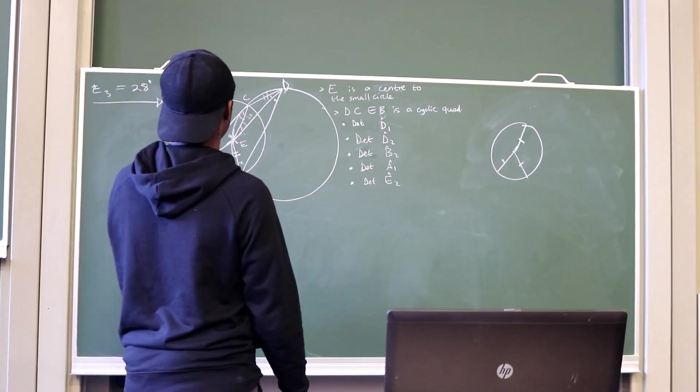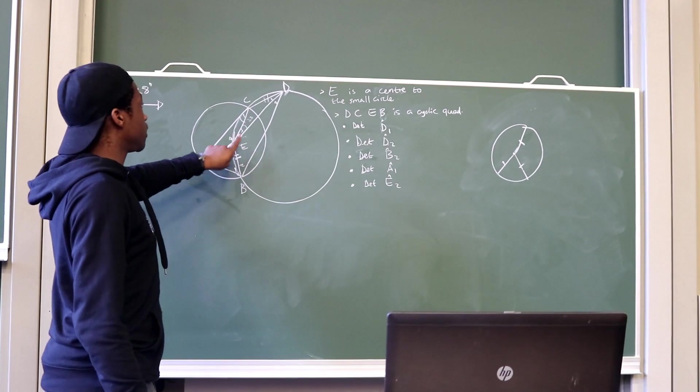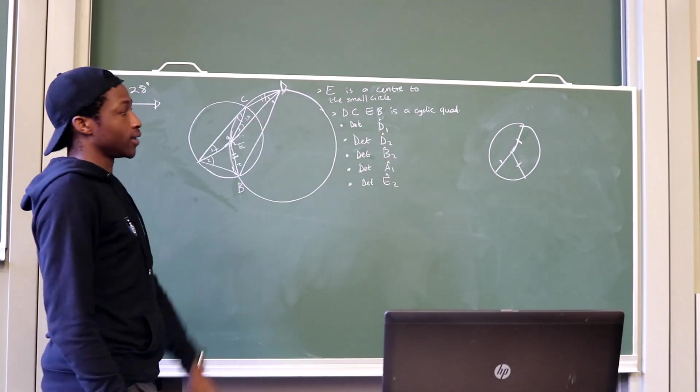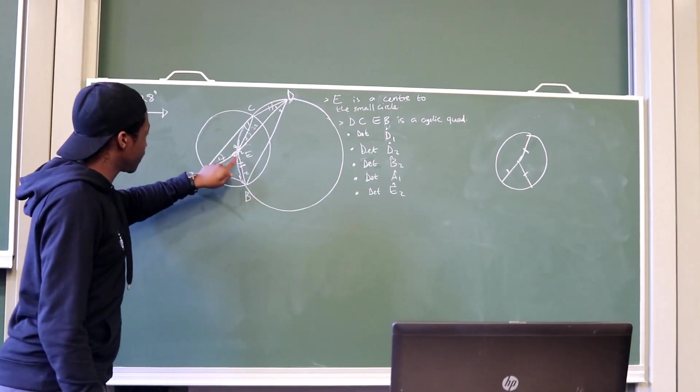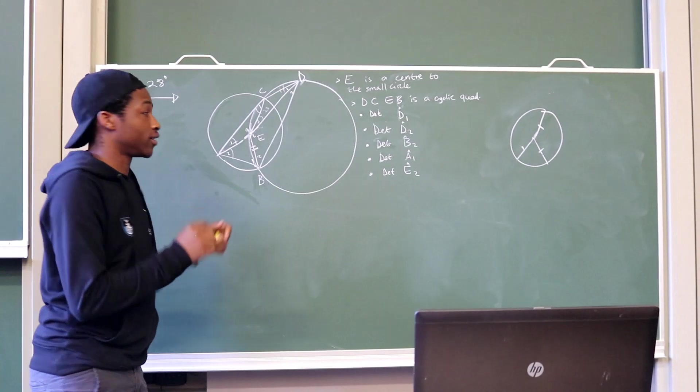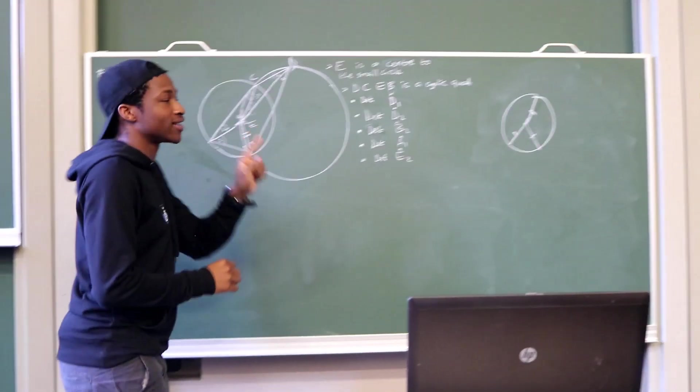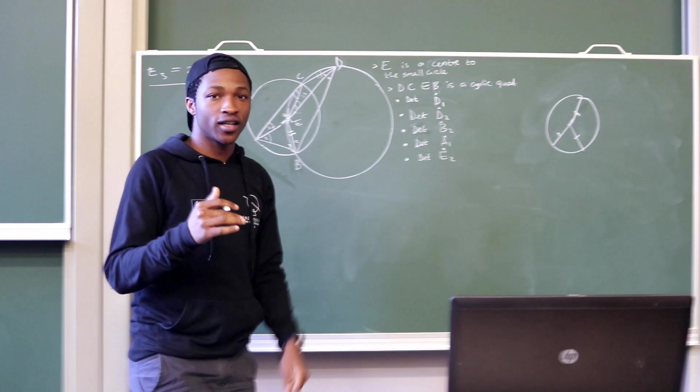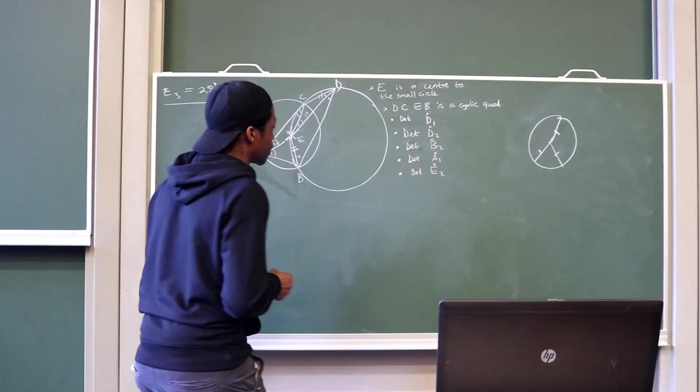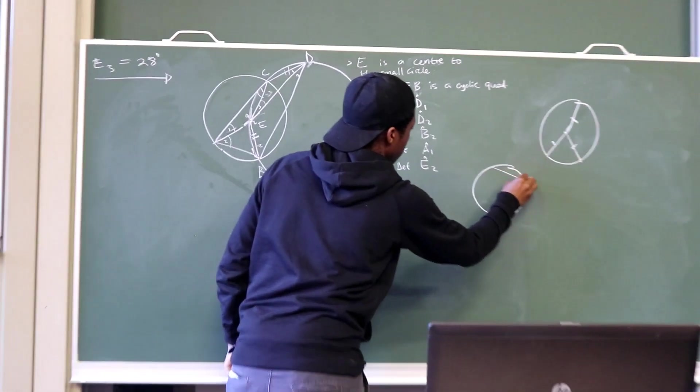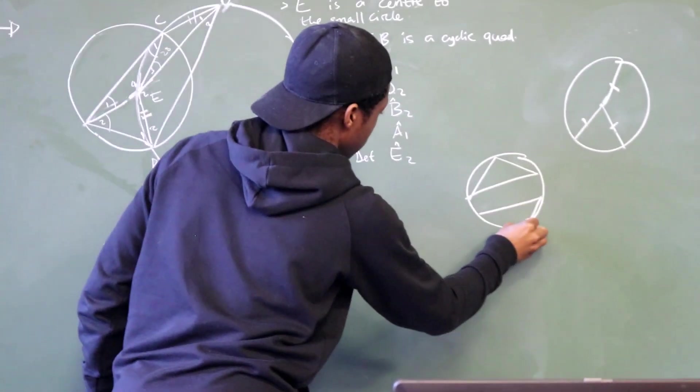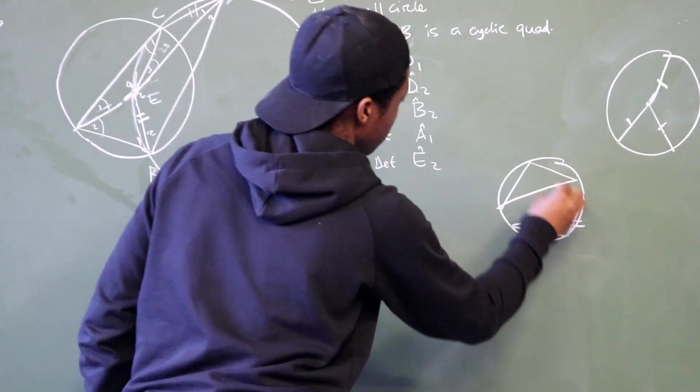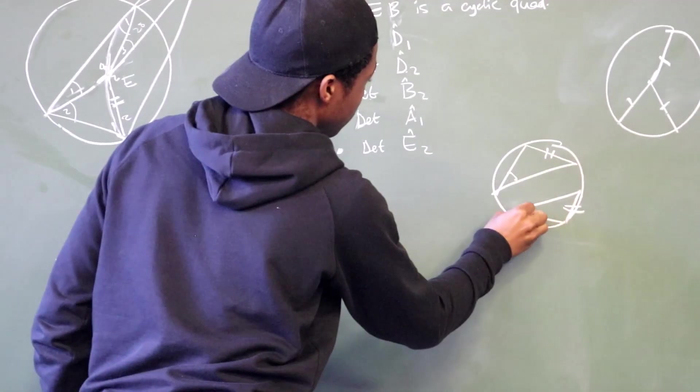And then, from there, we need to check. We are given that BE is equal to CD. It's given on the statement. And if we check, BE is a chord to the big circle. CD is a chord to the big circle. What did we say in the previous video? We said that if we have chords in a circle, if these chords are equal, then they will subtend equal angles to the circumference.